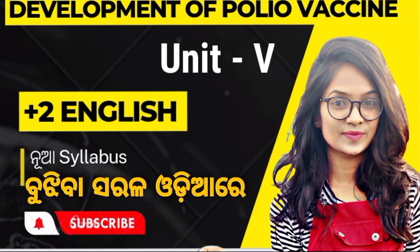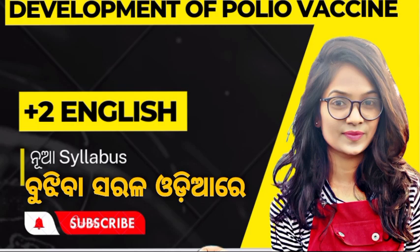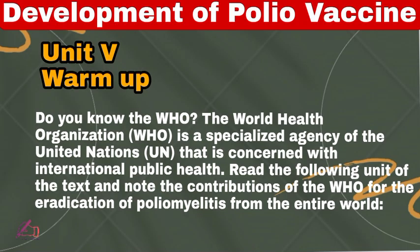This last unit is a very important unit, so we must read and understand it. Do you know WHO? WHO means the World Health Organization. The World Health Organization is the specialized agency of the United Nations that is concerned with international public health. Read the following unit of the text and note how the contribution of WHO is the eradication of polio from the entire world.